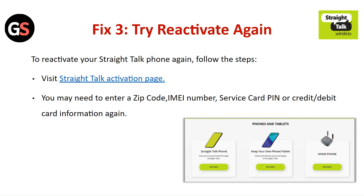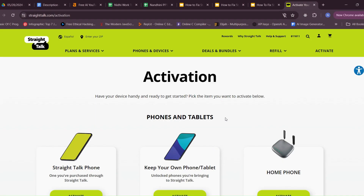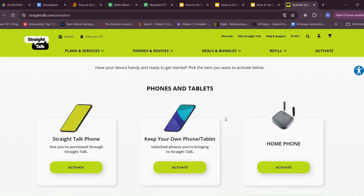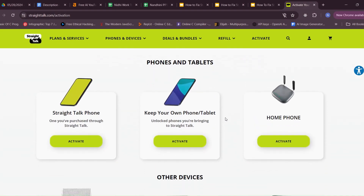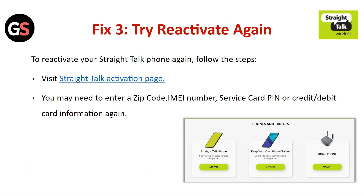Fix 3: Try reactivating again. To reactivate your Straight Talk phone, visit the Straight Talk activation page. You may need to enter a zip code, IMEI number, service card PIN, or debit and credit card information again.